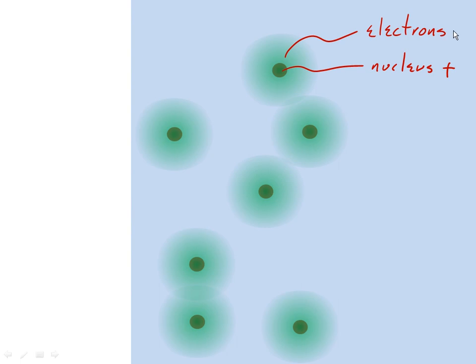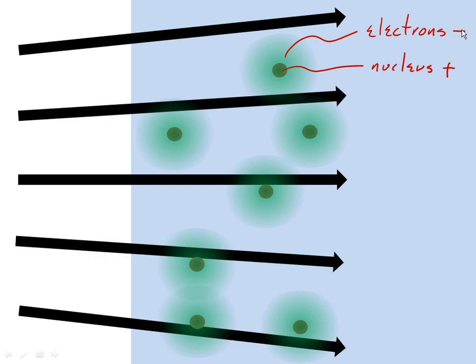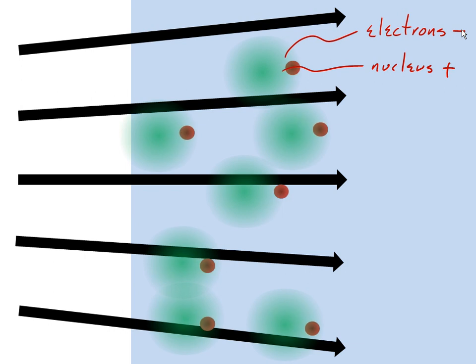These electrons have a net negative charge. For most solid materials, the nuclei are in some fixed lattice structure, like a crystal structure, and they're not able to move. But in a liquid or gas, the nuclei can move. The electrons are much more mobile because they're in a cloud and they're moving around this fixed nucleus.